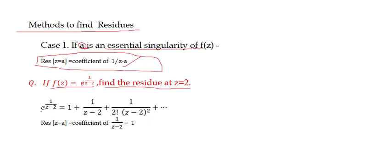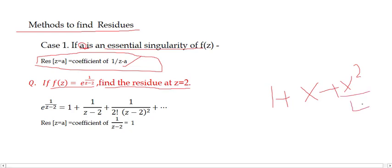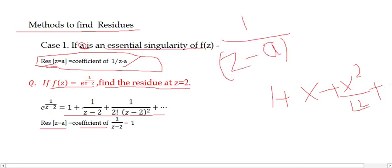We know the expansion of e^x equals 1 + x + x²/2! + ... Substituting x = 1/(z−2), we get e^(1/(z−2)) = 1 + 1/(z−2) + 1/(2!(z−2)²) + ... This is an essential singularity, meaning infinitely many terms in the principal part of the Laurent expansion. The residue at z = 2 is the coefficient of 1/(z−2), which equals 1.